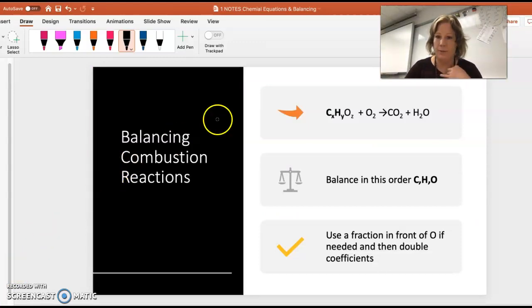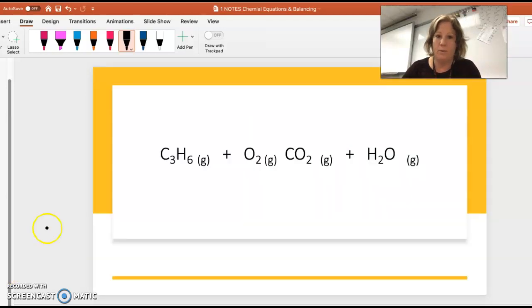Balancing combustion reactions. Combustion reactions are always going to be some kind of hydrocarbon - carbon hydrogen, sometimes there's oxygen in it, sometimes not - plus oxygen makes CO2 and water. These three things are constant. Sometimes these are tricky to balance. What I recommend is that you balance them in the order of CHO. If you balance them first carbon, then hydrogen, then oxygen, sometimes you do need to use a fraction.